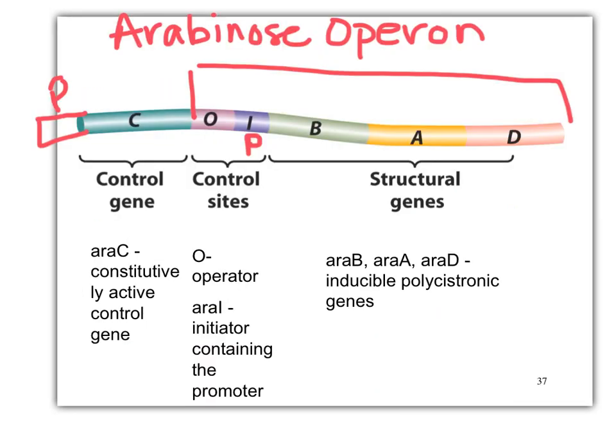Here's the arabinose operon. You'll notice the order: operator, control initiator site, and structural genes B, A, and D.